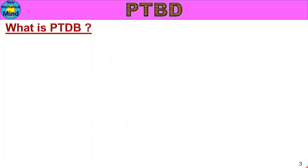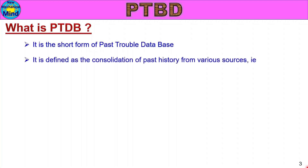First, what is PTDB? It is the short form of Past Trouble Database. It is defined as the consolidation of past history from various sources. From various sources, we will find past history details and past data, which is then consolidated.